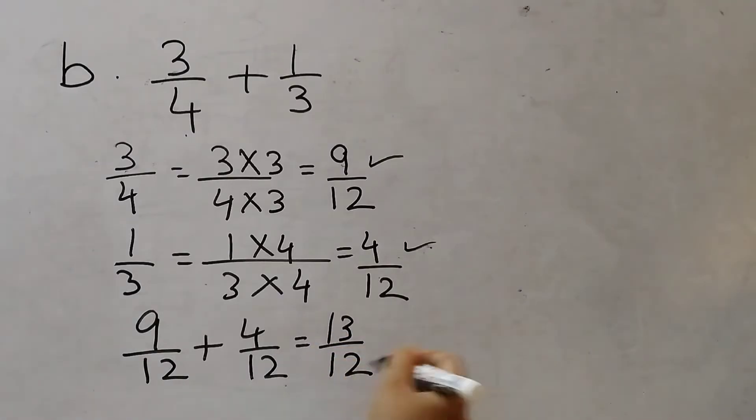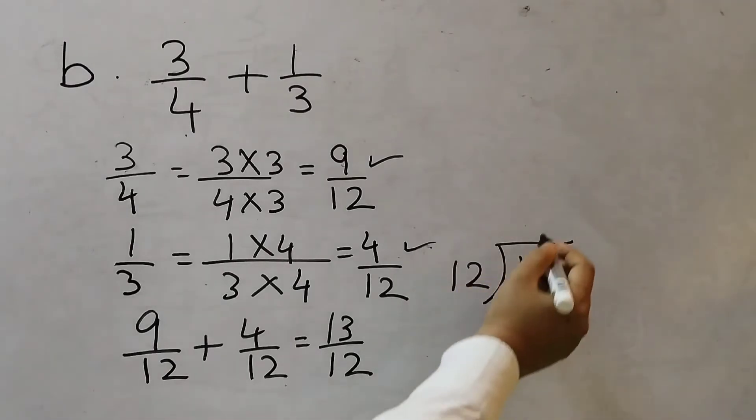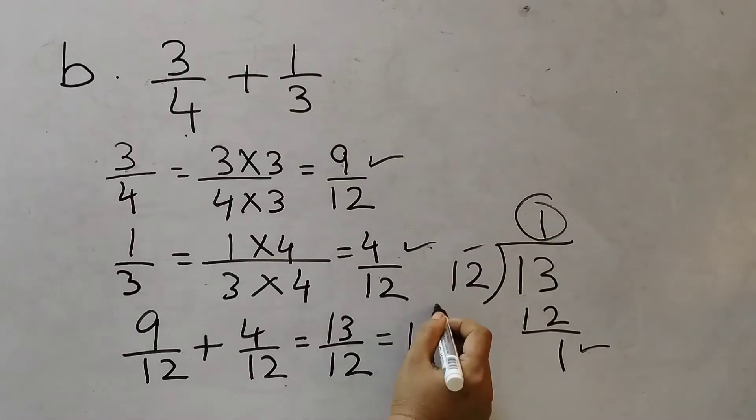And to convert it to mixed number, divide 13 by 12. 12 ones are 12. 1. So we got a 1. 1 remainder 12. So 1, 1 by 12. So this is the answer for the second one.